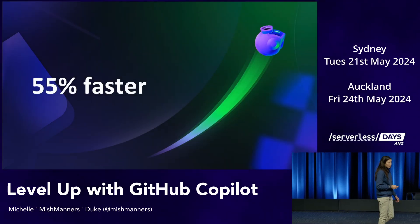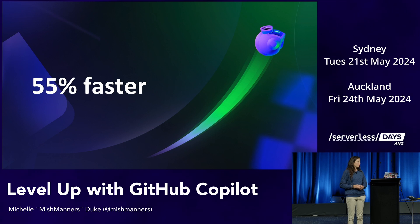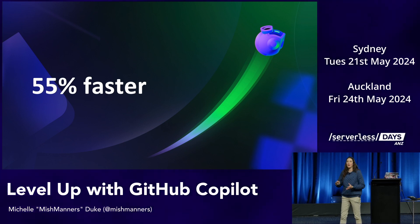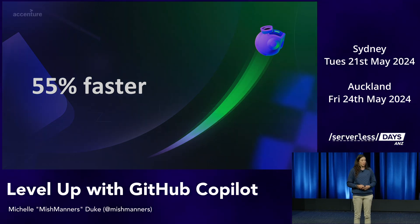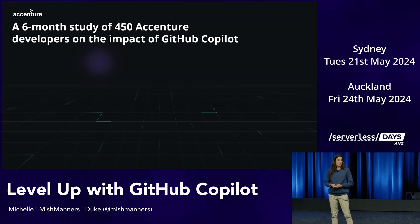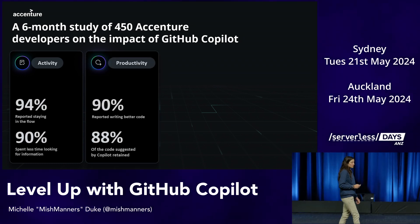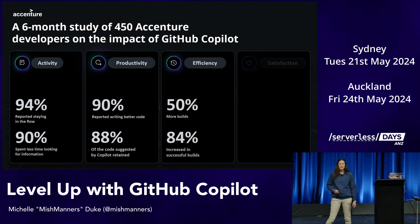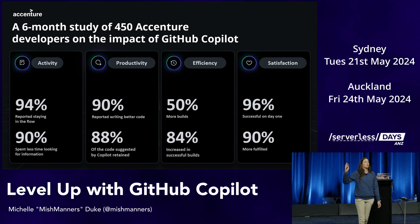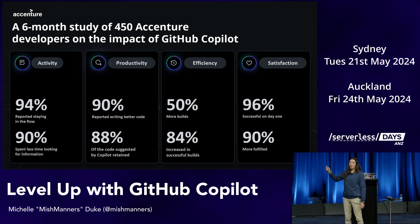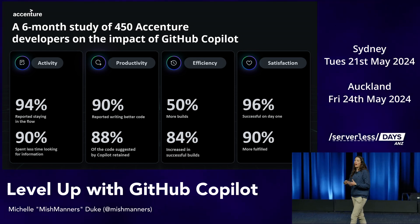When we first launched GitHub Copilot — without the chat functionality — developers experienced 55% faster coding. They were happier in what they built, and the quality of what they were building was higher as well. We also have customers like Accenture who did a six-month study on GitHub Copilot. One stat I love is efficiency. Activity and productivity numbers are great, but also important: keeping developers in the flow. Because if we keep developers in the flow of what they're doing, they're more likely to finish the task.